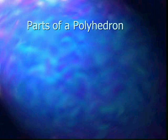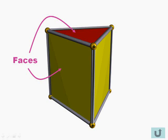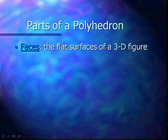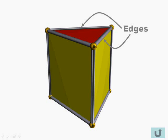The parts of a polyhedron. We have the faces that are the flat surfaces of a 3D figure, seen here with the red and yellow flat shapes. We have edges that are the segments formed by intersecting faces, seen here with the silver bars.